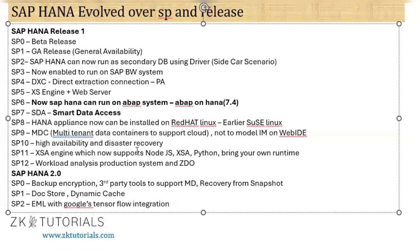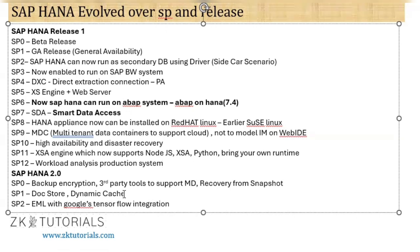Then comes SP10 with High Availability and Disaster Recovery. SP11 introduced XS Advanced Engine supporting Node.js programming. This completed the support pack cycle for SAP HANA Release 1. A new release was then introduced: SAP HANA 2.0. In SAP HANA 2.0 SP0, encryption and third-party tools were introduced. SP1 brought Document Store. SP2 introduced EML — External Machine Learning Library — with Google TensorFlow integration.